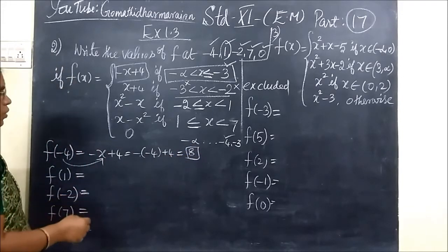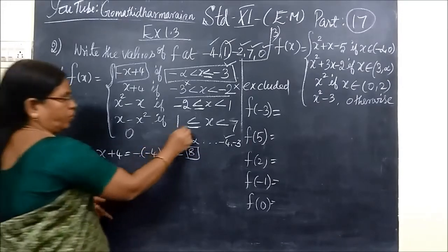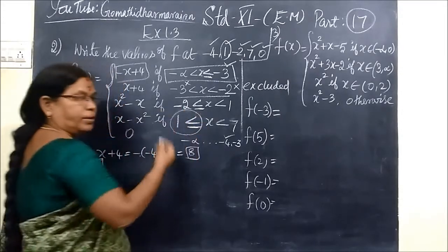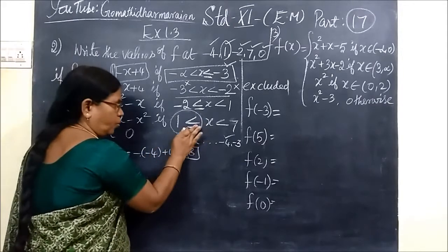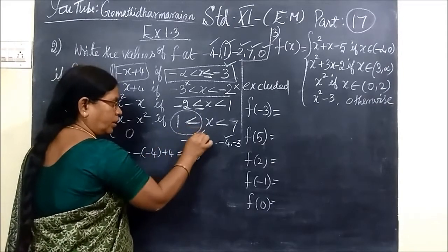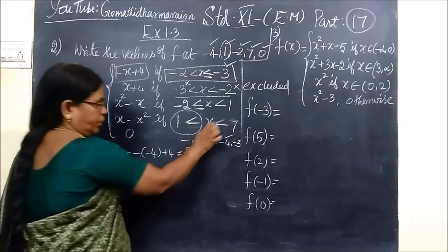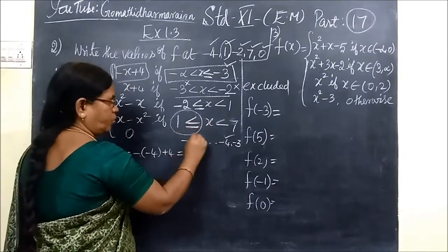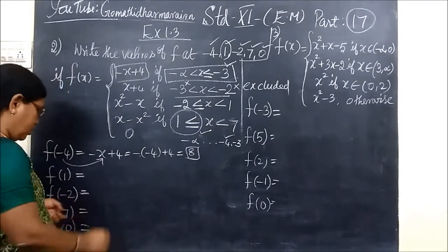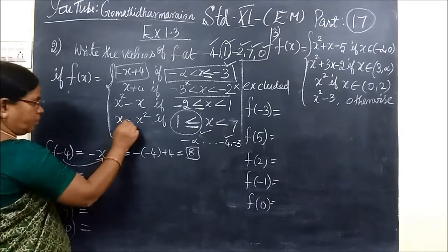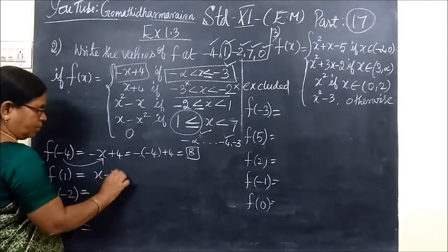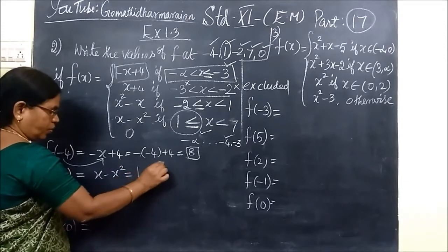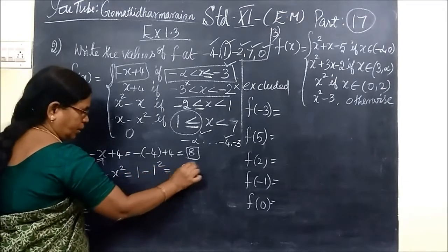Now come to the second one: f of 1. The value 1 will be here because 1 is less than or equal to here, so you can consider 1. The equal sign is included. So for x, substitute 1 into x minus x squared. So x minus x squared — that is nothing but 0.